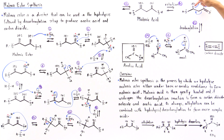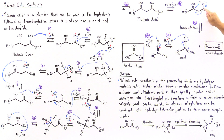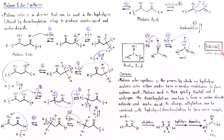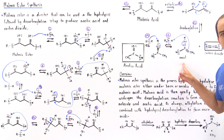In the decarboxylation, this pi bond breaks its bond to our hydrogen, this sigma bond breaks and forms a pi bond between the oxygen and the carbon, breaking off this carbon-carbon sigma bond and forming a carbon-carbon sigma bond between these two carbons. We form carbon dioxide as well as our enol.